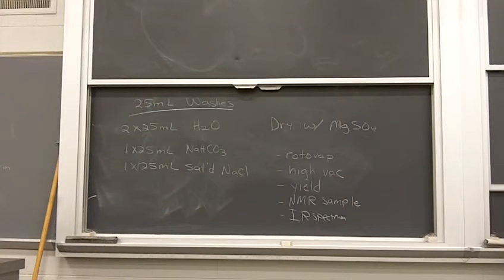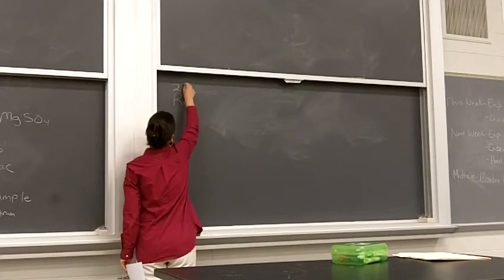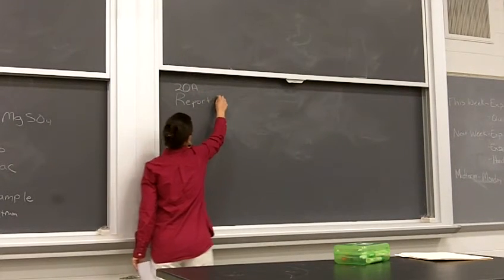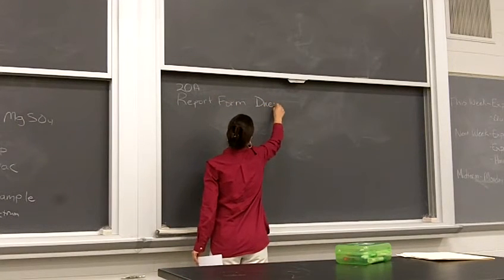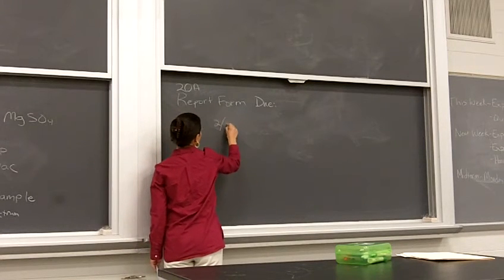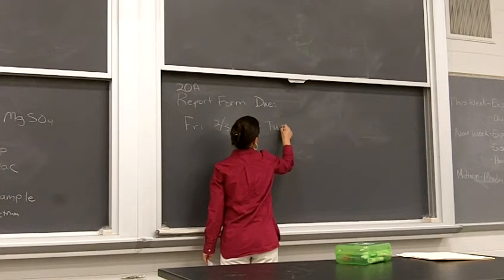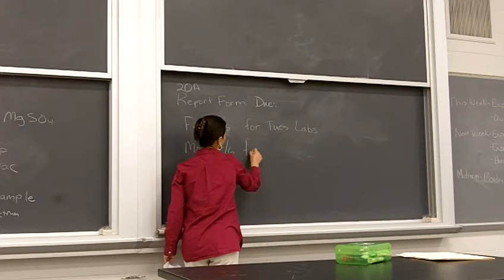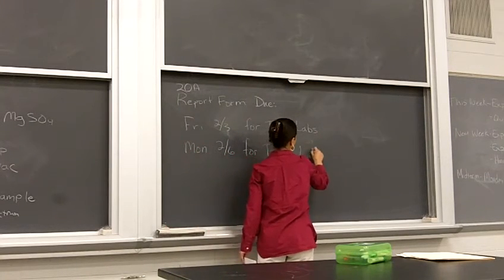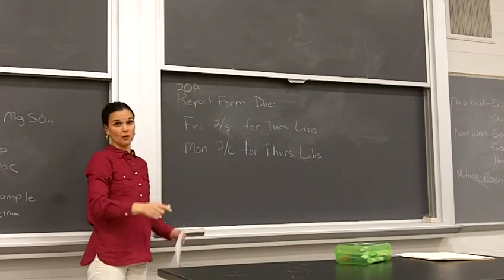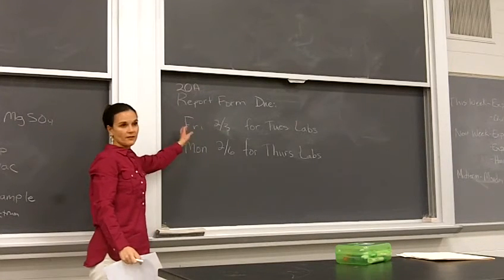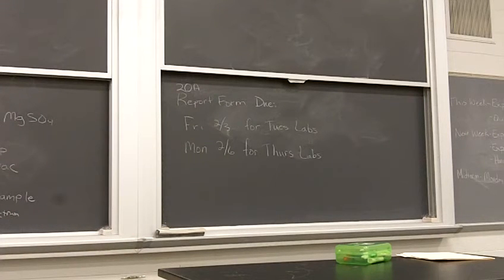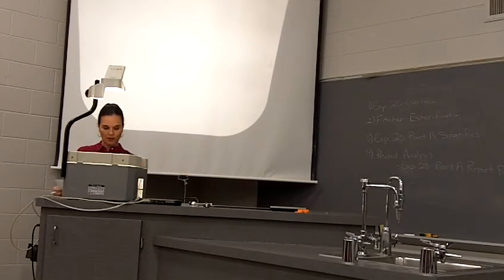For due dates: the 20A report form is due on Friday the 3rd for the Tuesday lab section, and Monday the 6th for the Thursday lab section. We'll give you specific times in lab, but keep those due dates in mind. Let's look at the report form because there are some specifics to discuss, along with a couple other things you'll do with your product to be ready for next week.